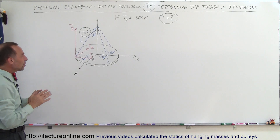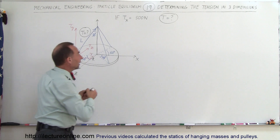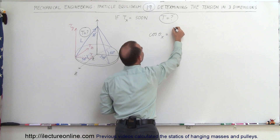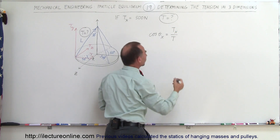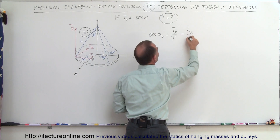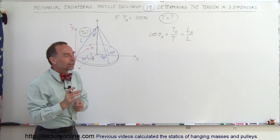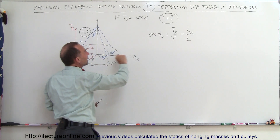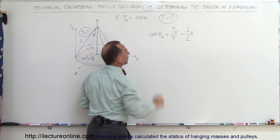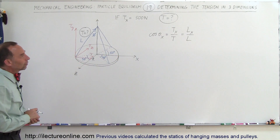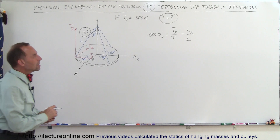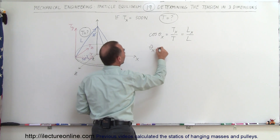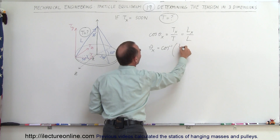To find T when you know T sub x, we use the direction cosine: cosine of theta sub x equals the tension in the x direction divided by the total tension. This is also equal to L sub x divided by L, since the ratio of the x-component of the length to the total length equals the ratio of the x-component of tension to the total tension. So theta sub x equals arccos of L sub x divided by L.